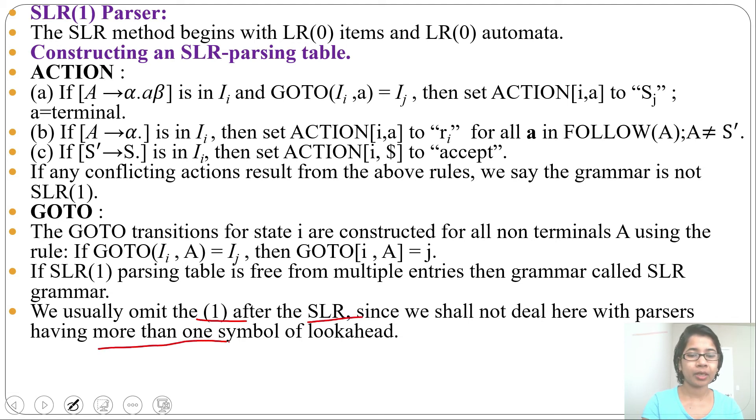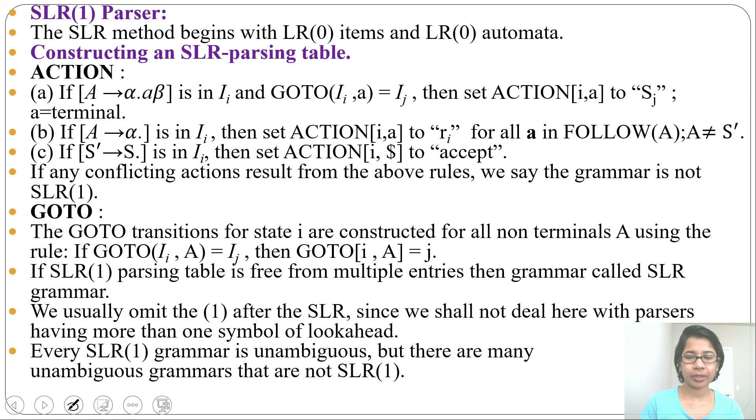We usually omit the (1) after SLR since we are not dealing with the parser having more than one lookahead symbol. We are dealing with the parser having one lookahead symbol, so we omit this one. We generally say SLR parser, SLR grammar. We don't say repeatedly SLR(1) for SLR(1) parsing. Grammar should be unambiguous, so you can say SLR(1) grammar is an unambiguous grammar.